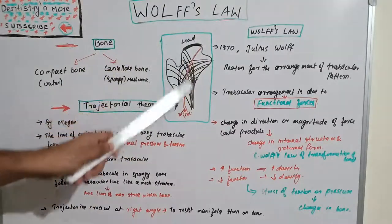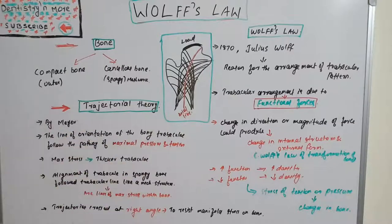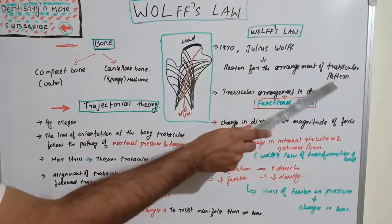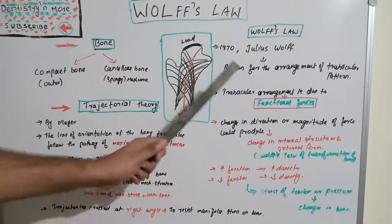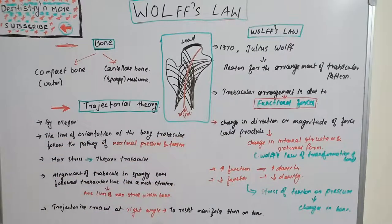Wolff's Law is just an extension of this trajectorial theory, explaining the reason for this maximal stress and tension. Wolff's Law was given by Julius Wolff in 1870. What he was saying is that the reason for the arrangement of the trabecular pattern is functional forces — trabecular arrangement is due to functional forces. That is what Wolff's Law is emphasizing.